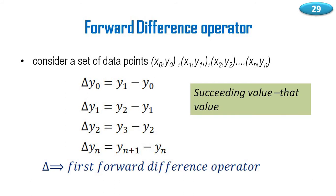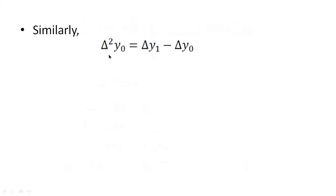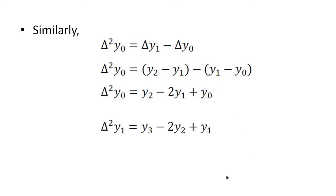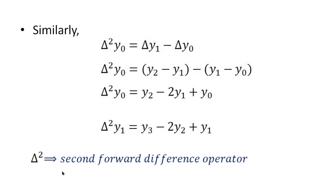Taking the difference of Δy: Δ²y₀ = Δy1 − Δy0. Substituting, Δy1 = y2 − y1 and Δy0 = y1 − y0, so Δ²y₀ = y2 − 2y1 + y0. Similarly, Δ²y1 = y3 − 2y2 + y1. Δ² is called the second forward difference operator.